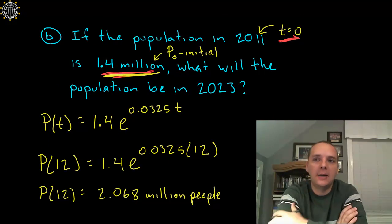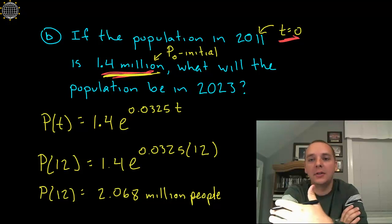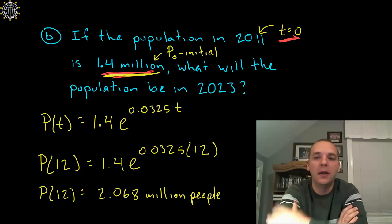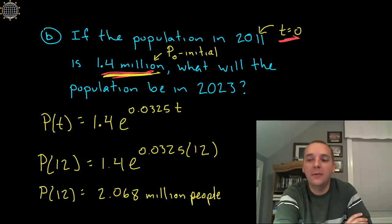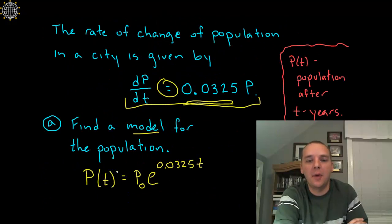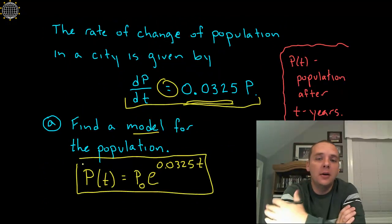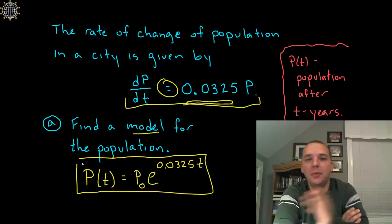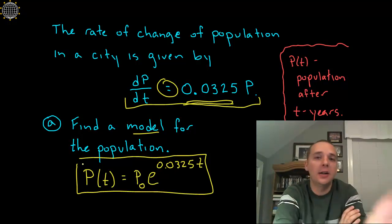But you could be asked what's the rate of change in population in 2011 or 2020 or 23, who knows what you could be asked. But if you can get the generic model down, if you can get this base model down, from there, assuming your algebra skills are pretty sharp, you can usually go in any direction and answer any question that you're asked about this situation.